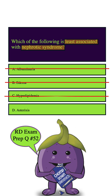How about D? Asterixis is a type of tremor or flapping of the hands. It's typically associated with liver disease, especially hepatic encephalopathy, and not nephrotic syndrome. Considering this, and the fact that we've eliminated A, B, and C, D is indeed the correct answer.